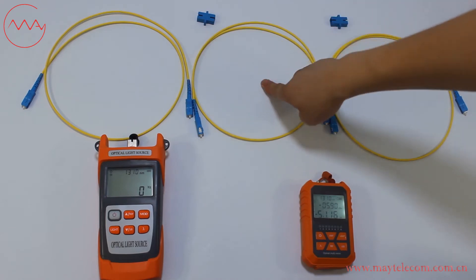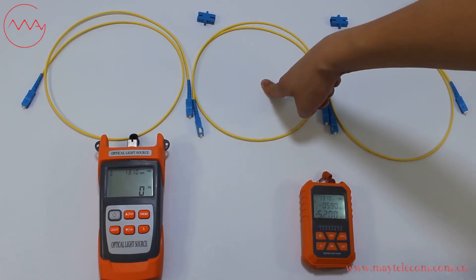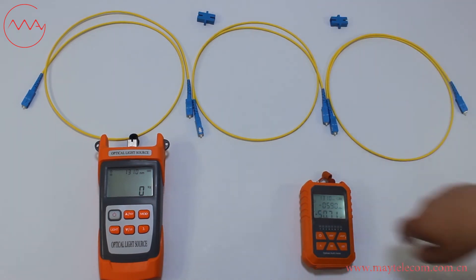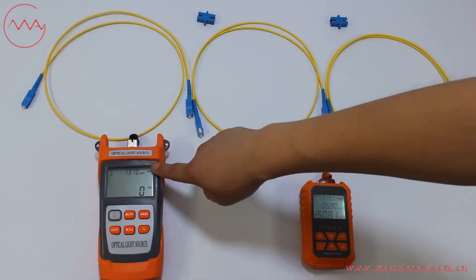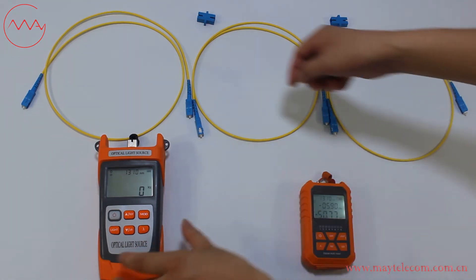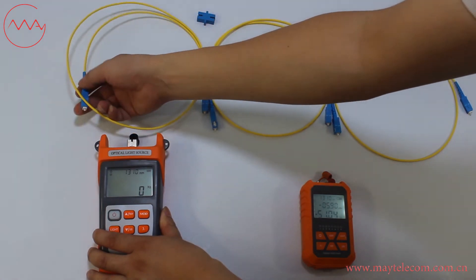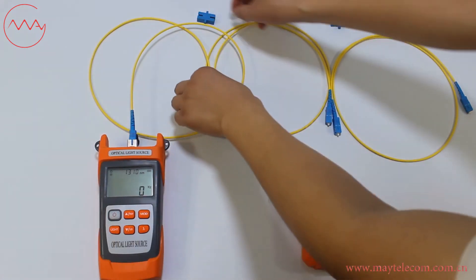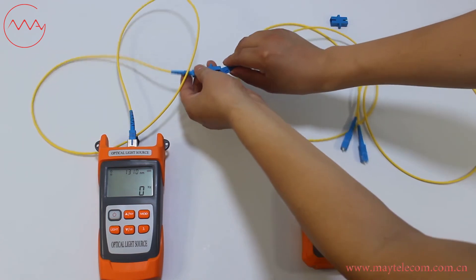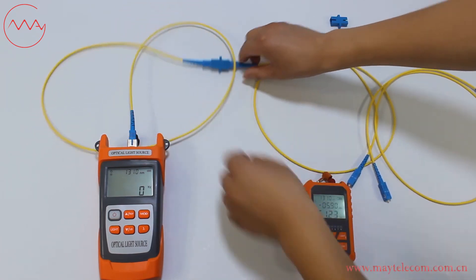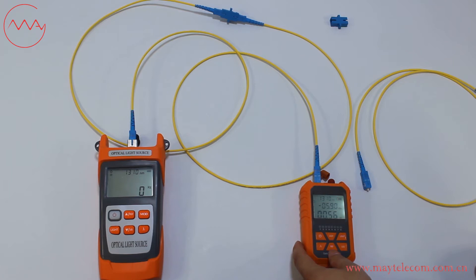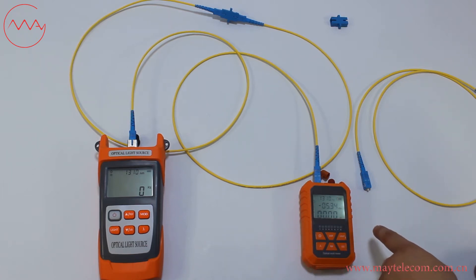This is the reference patch code. There are two pieces of reference patch code, patch code and test, and SC adapters. Set the same wavelength on the optical light source and optical power meter — select 1310 nm for example. Connect the reference patch code with the optical light source and optical power meter. Press the reference button to set 0 dB for relative power.